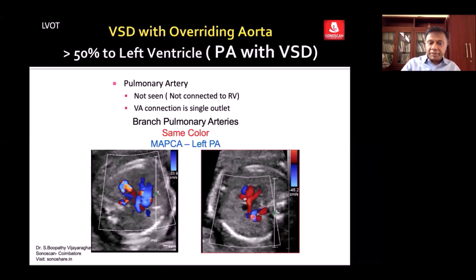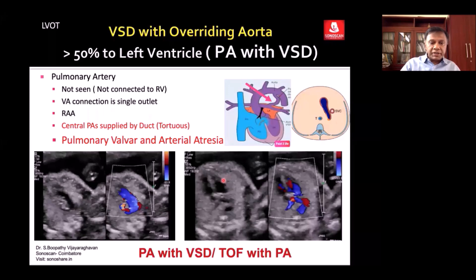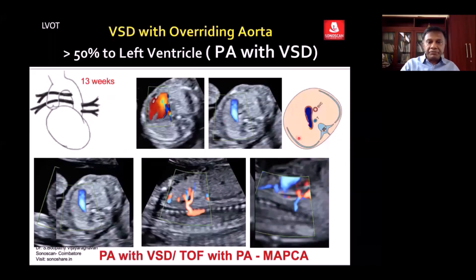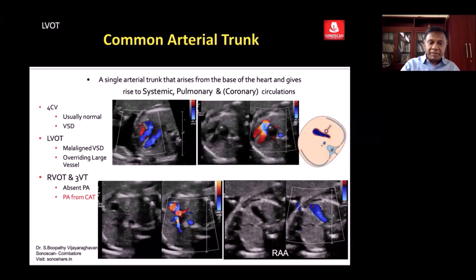Seeing the same fetus from the right side, the branch pulmonary arteries are both in red because the left branch pulmonary artery is fed from the duct and will be tortuous. You see a tortuous vessel from the distal aorta — not from the proximal — arising from the descending thoracic aorta, which gives a vessel feeding the confluence of the branch pulmonary arteries. At 13 weeks with VSD overriding, in the 3VT you see only the aorta and no pulmonary artery. On coronal scan you see a red vessel in blue arising from the inferior aspect of the proximal vessel.